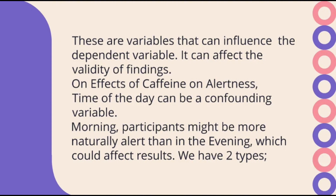There is always a primary relationship between an independent and dependent variable. If any other variable comes in between and confuses this relationship such that the change in the dependent variable cannot be fully attributed to the independent variable, then that variable is called a confounding variable. For example, time of the day can be a confounding variable since in the morning participants might be more naturally alert than in the evening, which could affect our results. Confounding variables have two types: intervening variables and extraneous variables.